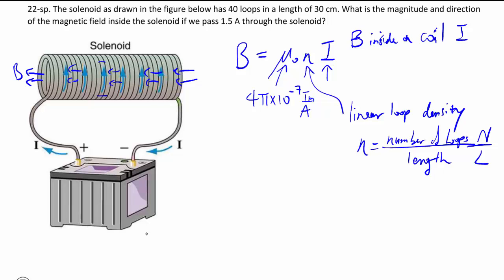What's not present is the area. It doesn't matter. It's independent of the area. You can have big loops, you can have small loops. It's all going to give you the same field. So you don't have to worry about radius or cross-sectional area or anything like that.